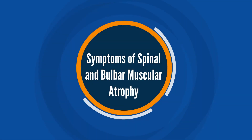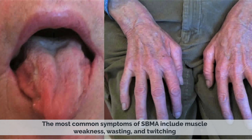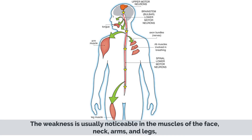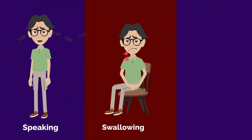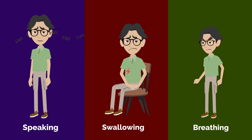The most common symptoms of SBMA include muscle weakness, wasting, and twitching. The weakness is usually noticeable in the muscles of the face, neck, arms, and legs, and can eventually lead to difficulty speaking, swallowing, and breathing.